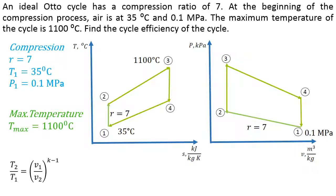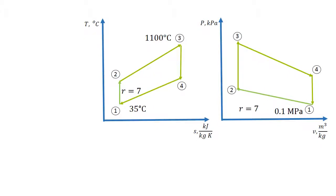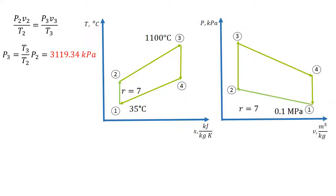Using the compression ratio, we can find the temperature in stage 2. Remember to use the temperature in terms of Kelvin. Temperature 2 is equal to 670.8 Celsius. The pressure in stage 2 is 1524 kilopascals. For process 2-3, the pressure at state 3 is given by the following formula, which is equivalent to 3119.34 kilopascals. For temperature 4, which is isentropic, the value is 630.39 Kelvin.